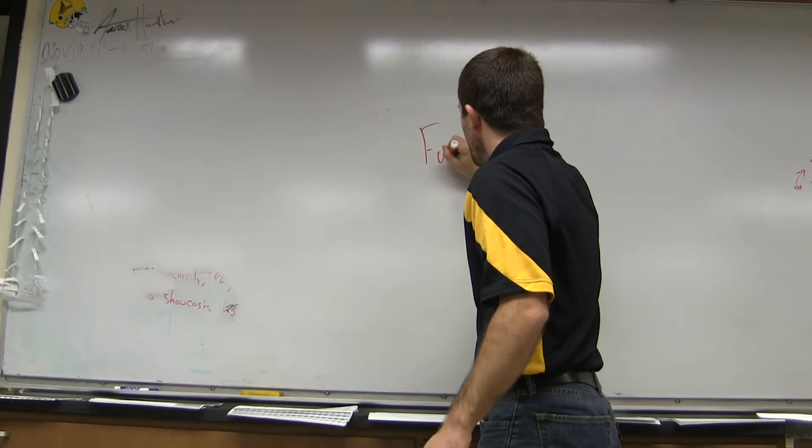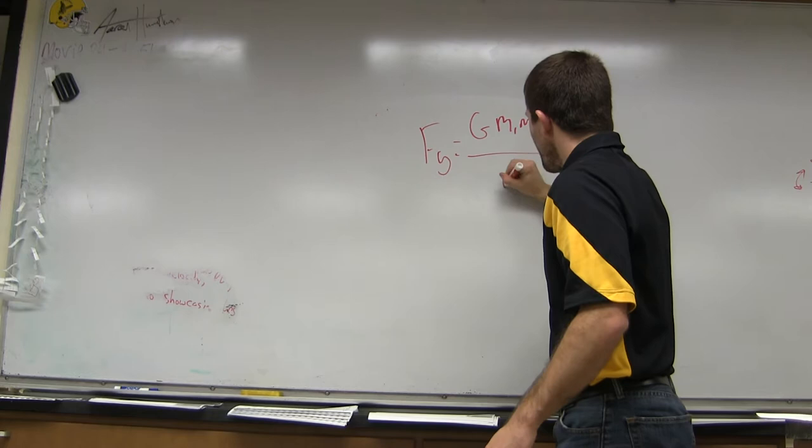Gravity's equation is force of gravity equals g constant times mass 1, mass 2 over distance squared.